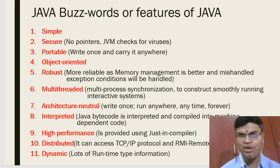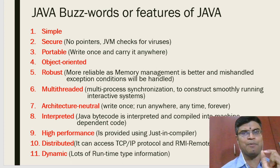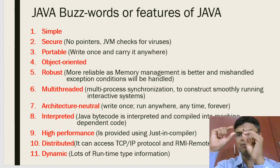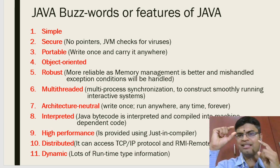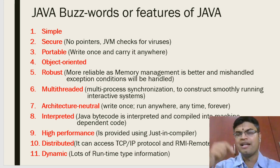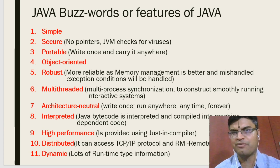Java is very secure. In C and C++, pointers are dangerous — you could accidentally access a memory location where your operating system files are stored, write data there, and corrupt the OS. This pointer concept is very dangerous and has been removed in Java, making it much more secure.